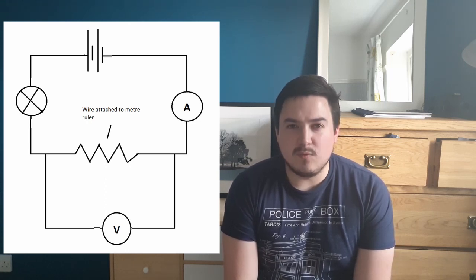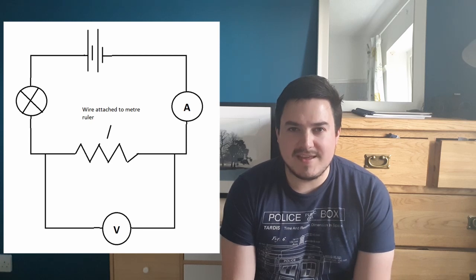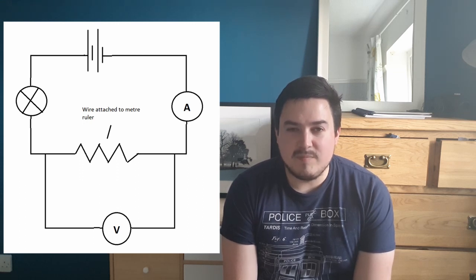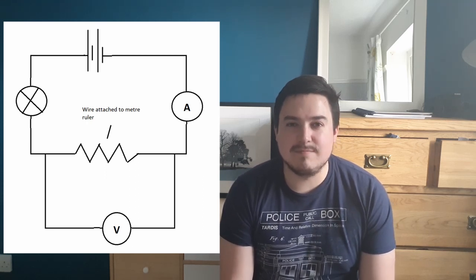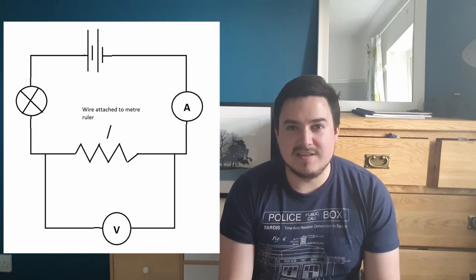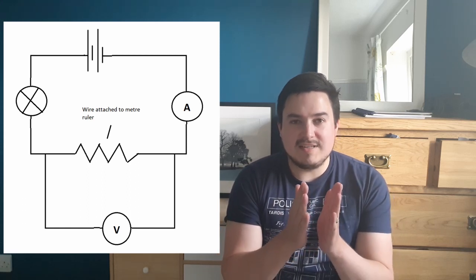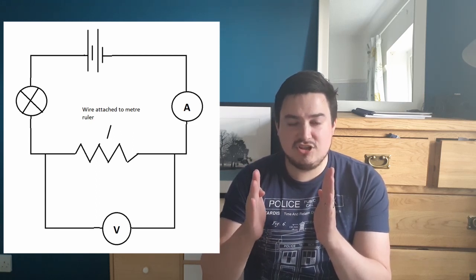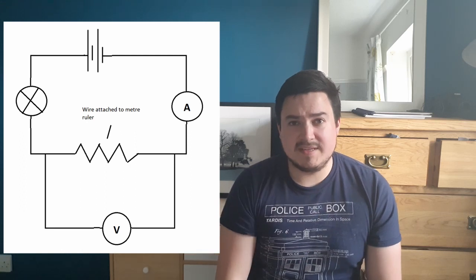It contains an ammeter in series to measure the current in the circuit, because we need the current to calculate resistance. It also contains a voltmeter in parallel, either side of the length of wire we're using, connected before and after that wire to measure how much energy was used. The length of wire lets us measure current and voltage for a specific length. We can then change the length and re-measure to see how resistance has changed.